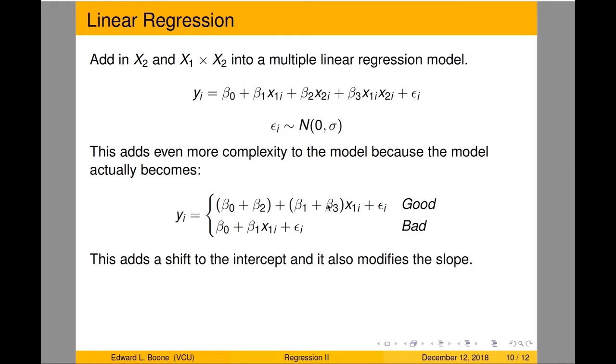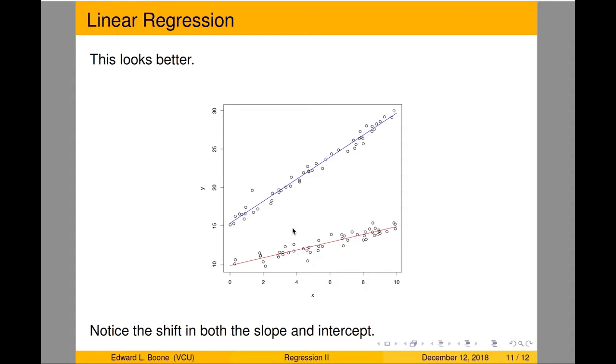And then I have a line here. That's our standard line for the bad group. Now notice it adds a shift to the intercept. The intercepts aren't the same, nor are the slopes. And if I were to run this model, this is the picture I get. And that looks pretty daggone good.